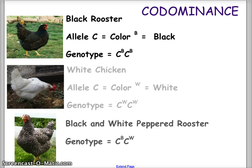Another example of codominance involves black roosters crossed with white chickens, giving offspring that are peppered — showing both black and white feathers — producing that peppered appearance. For the black rooster we use C for color with superscript B for black, giving genotype C^B C^B. The white chicken uses superscript W for white, giving genotype C^W C^W. The peppered rooster's genotype is C^B C^W. These are multiple allele situations because we use superscripts to demonstrate more than one dominant trait.